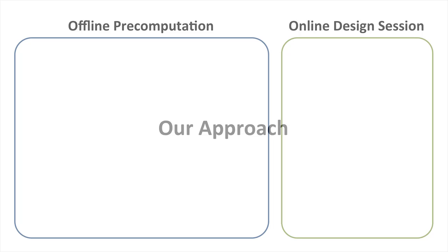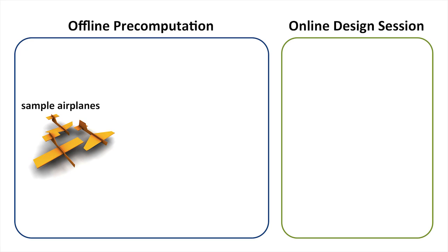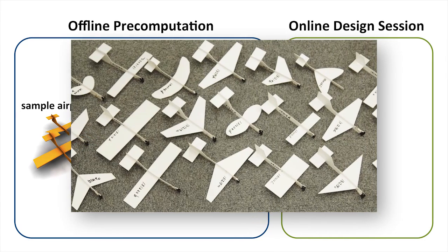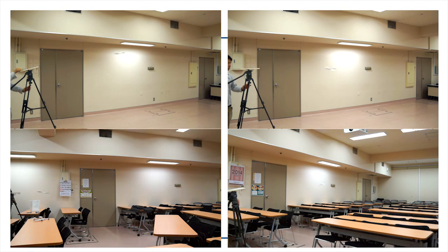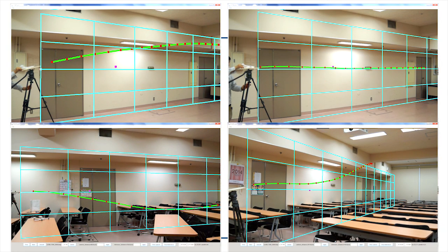Our approach consists of two parts: an offline pre-computation and an online design session. In the pre-computation stage, we first design and fabricate a set of sample airplanes. Then we fly each plane in different conditions and record the results to obtain real flight trajectories.